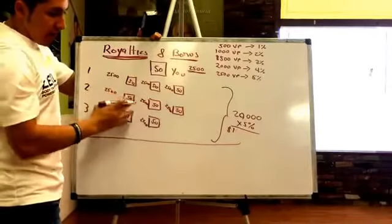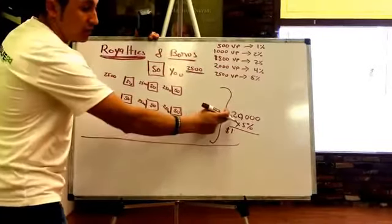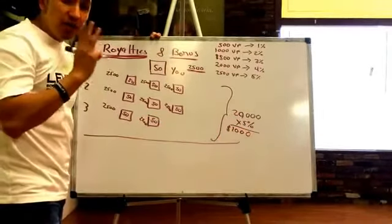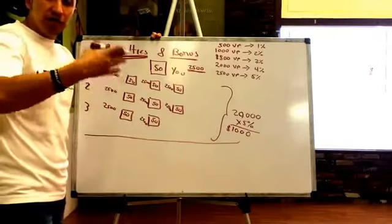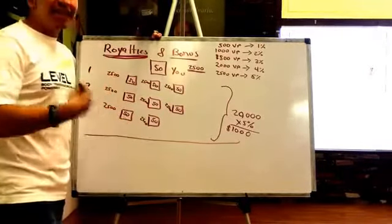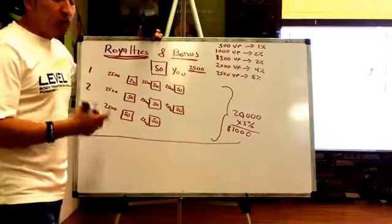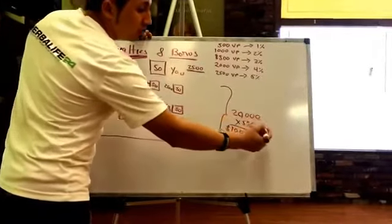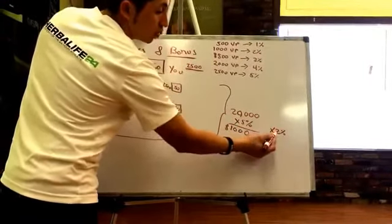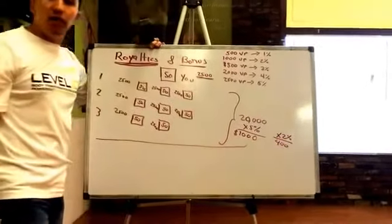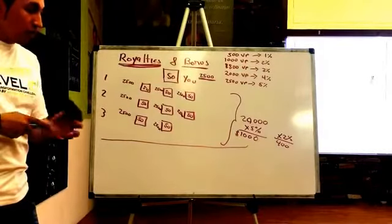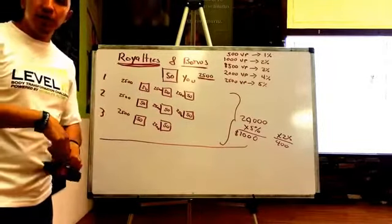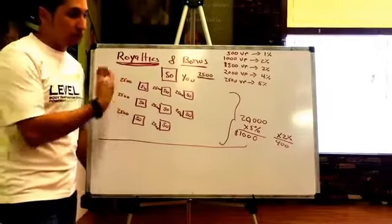Your group of 8 supervisors each doing 2,500 volume points totals 20,000 volume points. The 5% of 20,000 is $1,000. By doing three consecutive months of $1,000 in royalties, you qualify for a level called GET Team — Global Expansion Team. When you qualify for GET Team, on your fourth month you start getting paid an extra bonus: 2% of your group volume. So 2% of 20,000 is an extra $400.